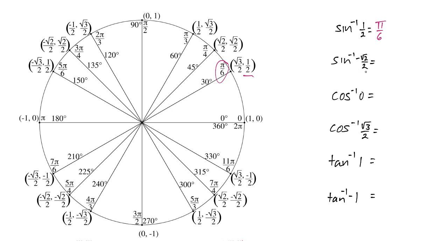When is the y value equal to negative square root of 2 over 2? Well, there's one, but there's another. Which one do we use? Should our answer be 5 pi over 4? Or should it be 7 pi over 4?